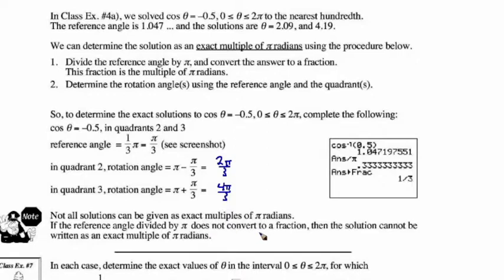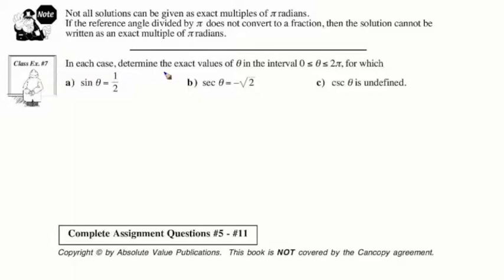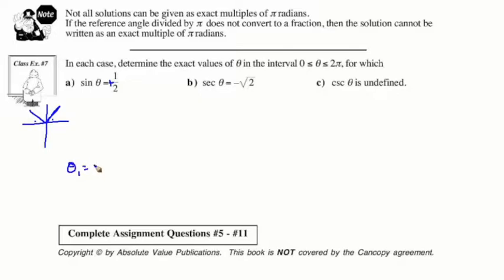Let's take a look at classic example number 7. In each case, determine the exact values of theta in the interval 0 to 2 pi for which sine theta equals a half. This is in radian measure, so the calculator should be in radian mode. Since sine is a positive half, the terminal arm is going to be in quadrant 1 and quadrant 2. So there's a reference angle in each. Theta 1 is going to be the reference angle, and theta 2 is going to be pi minus that reference angle.